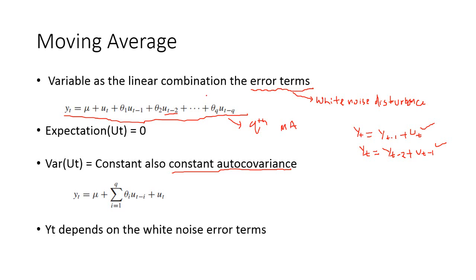Okay, so this is how the mathematical representation looks like. The order of the moving average process is determined by the number of lags which are used. The number of lags used here is q. So, this is a MA(q) process, MA with order of q.